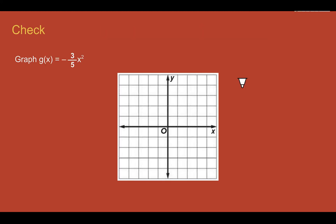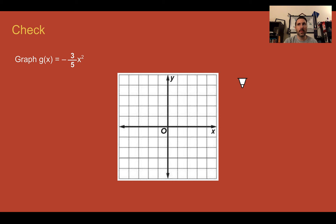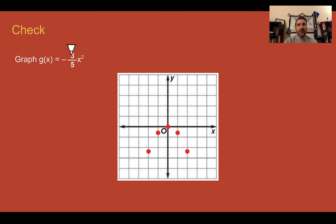Check your understanding: graph the function shown. It might be helpful to use a table or plug in some values to get your coordinates. Pause the video now and complete the check. Check your answer: plug in 0, you get 0. Plug in 1, you'd get three fifths — and it's negative, so we're going down. Plug in 2: two squared is four, four times three is twelve, twelve fifths is about two and two fifths, so down here. The final graph would look like this.